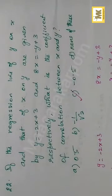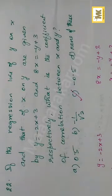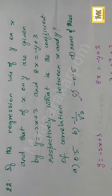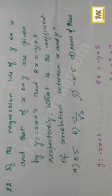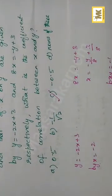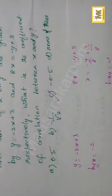Question number 22. If the regression line of y on x is y equals minus 2x plus 3, and that of x on y is 8x equals minus y plus 3, what is the coefficient of correlation between x and y? From the y on x equation, byx is equal to minus 2. From the x on y equation, bxy is equal to minus 1 by 8.